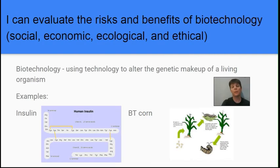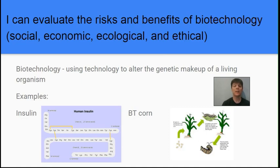Our next learning target is to evaluate the risks and benefits of biotechnology, which can involve social, economic, ecological, and ethical considerations. Biotechnology is using technology to alter the genetic makeup of a living organism. One example is genetically engineered insulin. Before this, diabetics had to use insulin collected from cows or pigs during the slaughtering process. The biotech version inserted the gene for human insulin into a bacterium, tricking it into making the human protein. You can grow these bacteria to produce a lot of insulin, purify it, bottle it, and sell it — giving diabetics human insulin as opposed to cow or pig insulin.